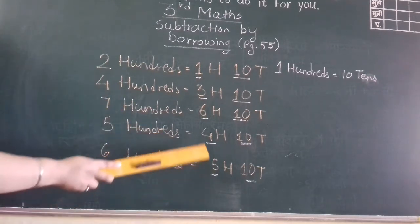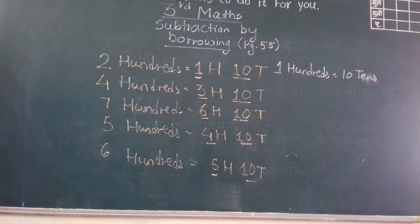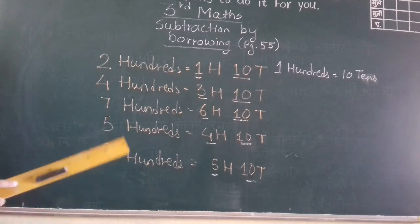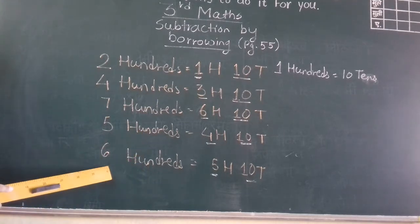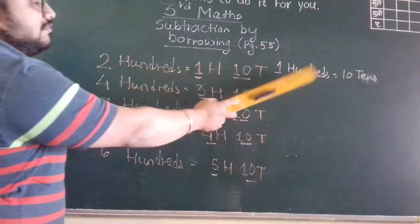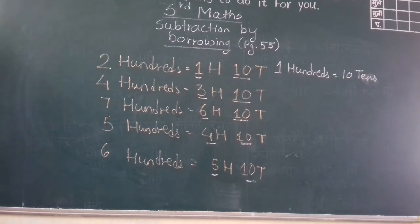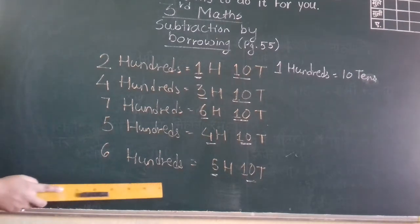Five hundreds means four hundreds ten tens. Next comes five hundreds. Next is six hundreds. Six hundreds means five hundreds and ten tens. Ten tens means one hundred. So this five hundred and this one hundred together comes six hundreds.